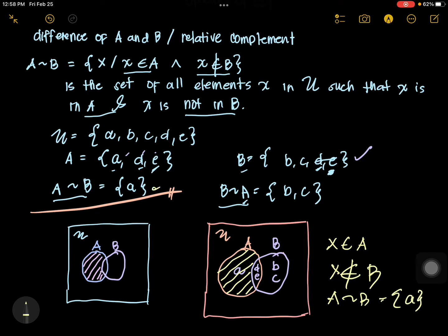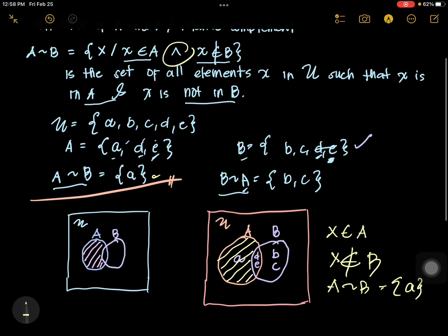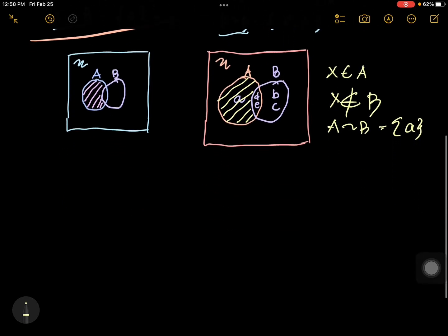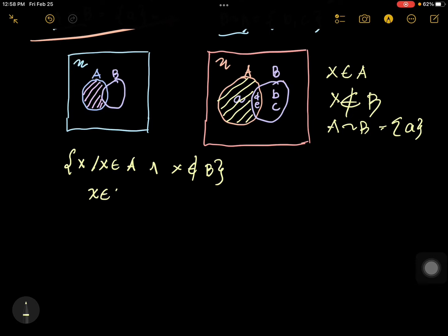As you can see, the symbol here is AND. So, X is an element of A AND X is not an element of B. We are going to test all elements in the universal set using two propositions combined with the AND symbol.